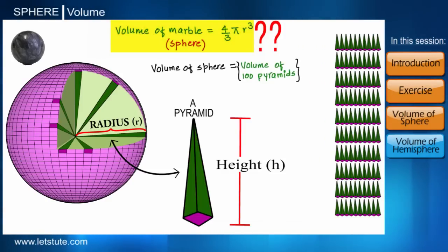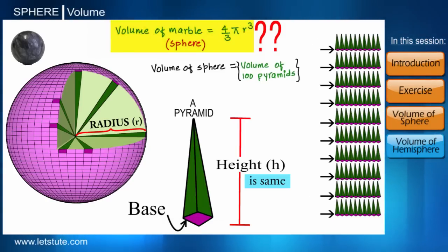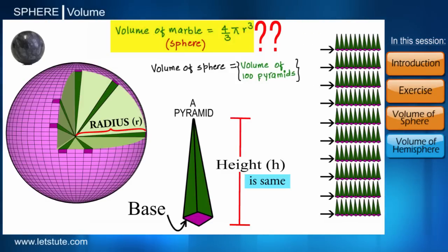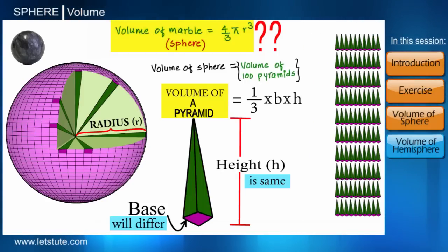Therefore we can conclude that height of all pyramids is same. But when we talk about the base of these pyramids, they form the surface area of the sphere, but unlike height, they may differ in their areas. We know that the volume of a pyramid is calculated as 1/3 into base into the height, and we have hundred such pyramids with different bases.